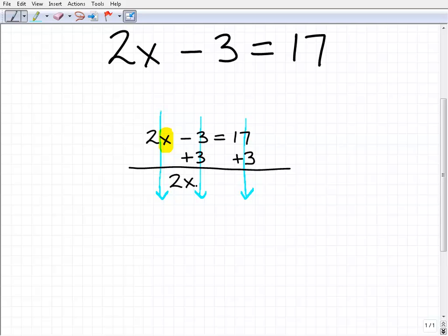We don't have to write anything there because it's 0. Then 17 plus 3 is 20. So what we've done is taken this equation and rewrote it in a different, easier way to solve.